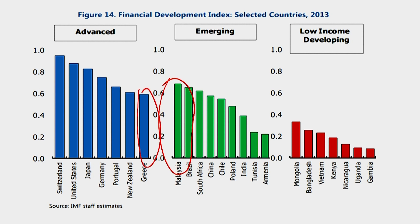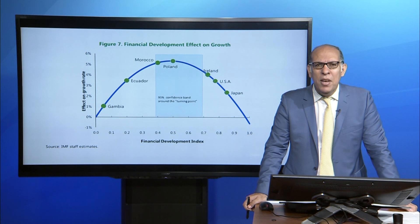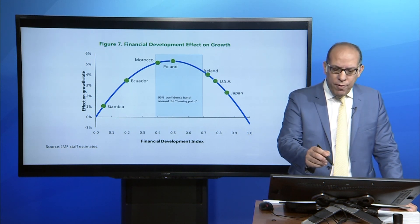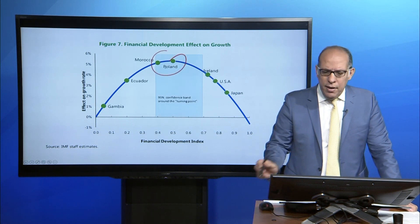Also, several emerging markets, such as Armenia and Tunisia, have lower levels of financial development than some low-income and developing countries, such as Mongolia and Bangladesh. Figure 7, which is based on a sample of 128 countries over 1980 to 2013, suggests that financial development increases growth, but the effect weakens at higher levels of financial development and eventually becomes negative.